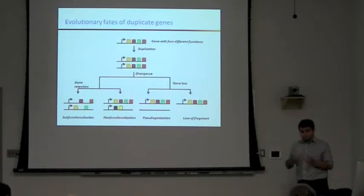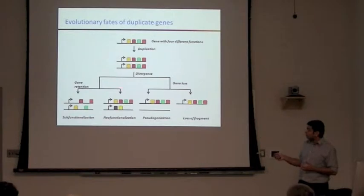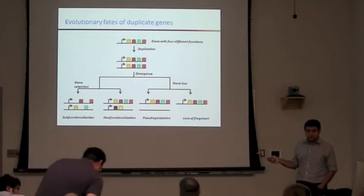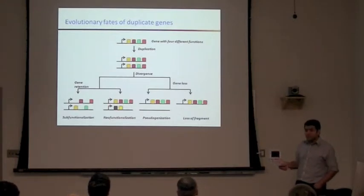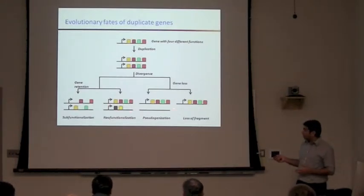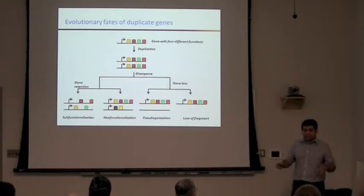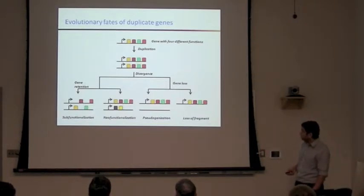Once the genome duplicates, at that point in time you have duplicate genes. Over time, these two genes evolve and mutations accumulate. You can have one of four fates: gene retention with sub-functionalization, where ancestral functions are partitioned into the two copies; neo-functionalization, where one gene gets completely new functions; pseudogenization, wherein stop mutations or frameshift mutations cause the gene to lose its function completely; or the entire region can get deleted, which you won't be able to detect at all.